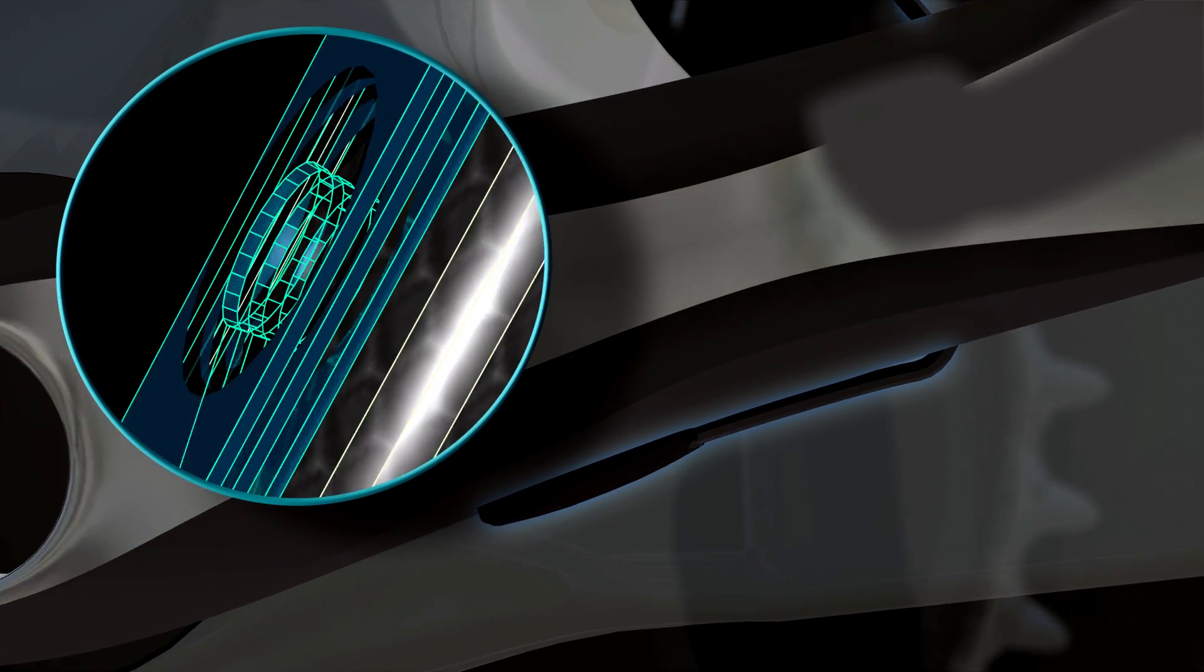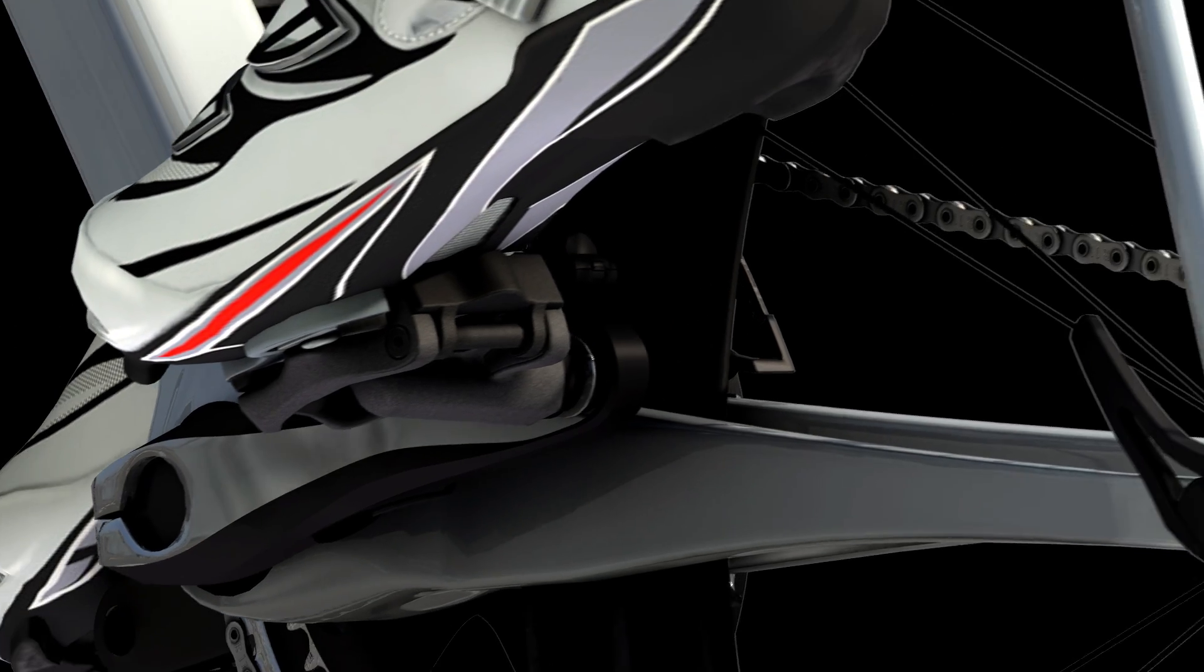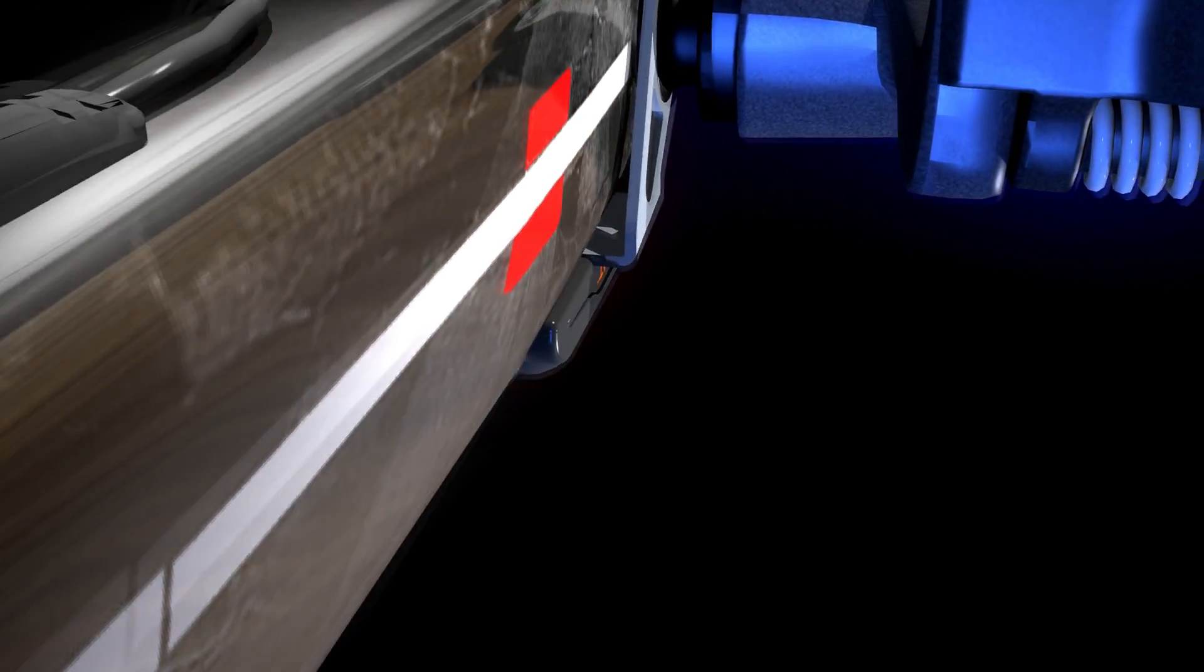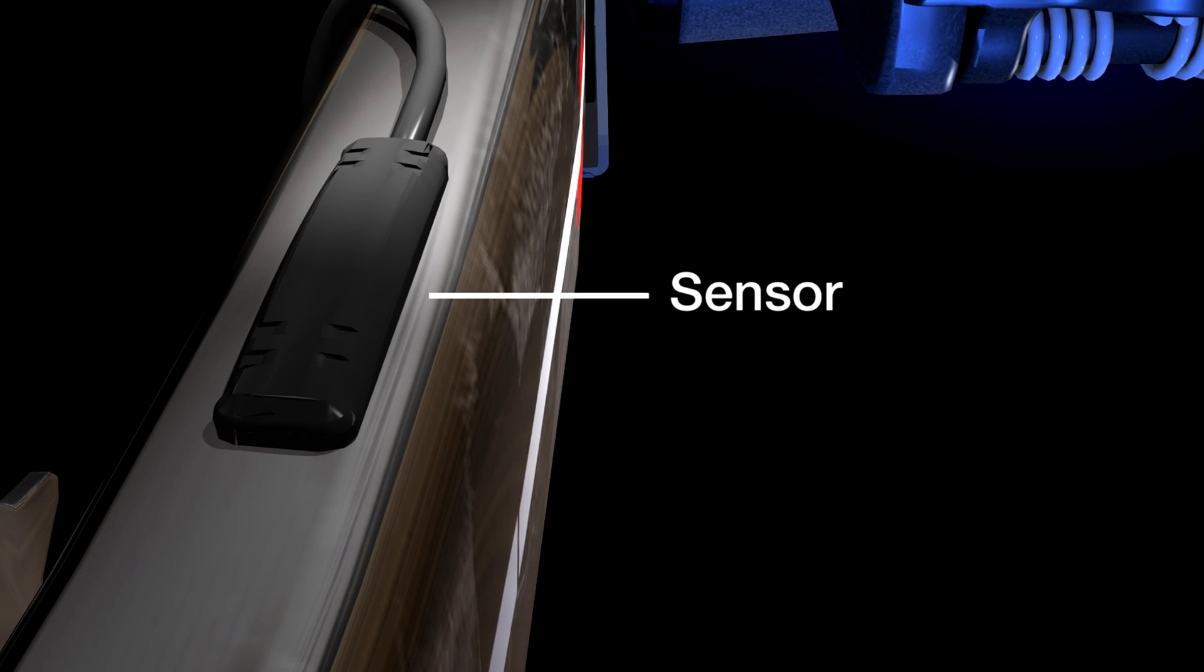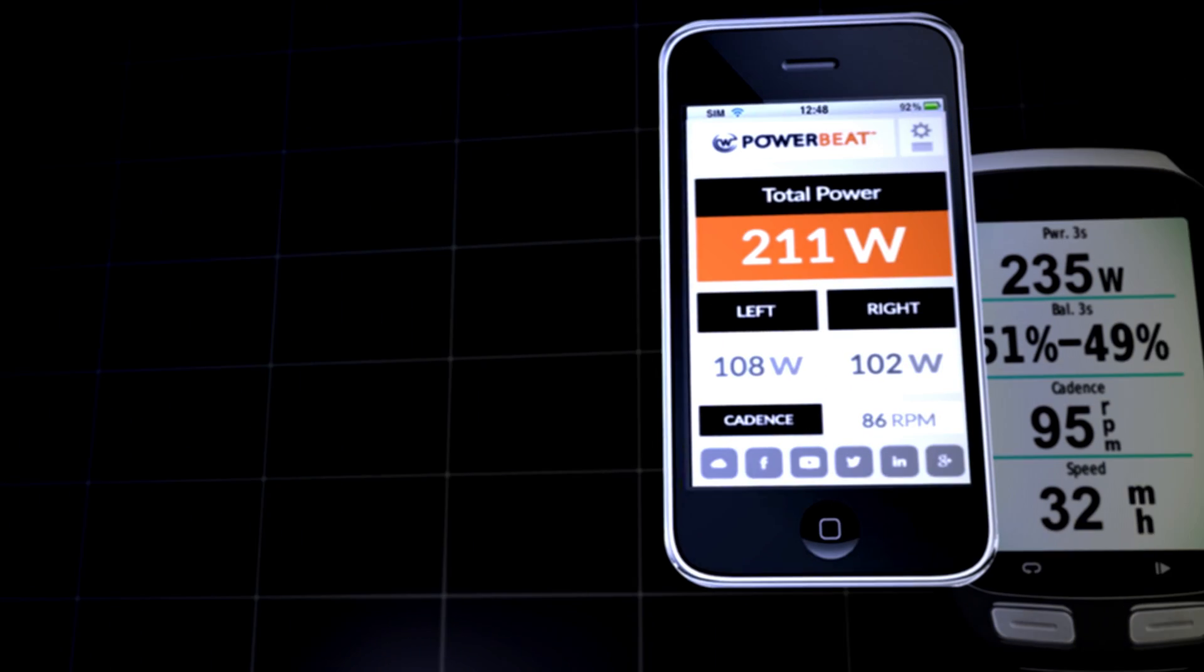The strain gauges are mounted on a globally patented innovative micro construction of springs and beams, measuring the torque and force applied on the crank arms down to the millisecond. Our patented algorithm collects and crunches these multiple streams of data, then wirelessly transmits consistent power readings to your cycling computer or smartphone.